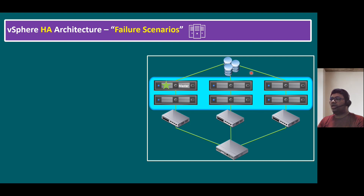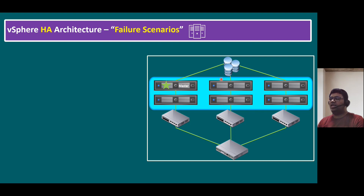The third scenario is network level. Physical network devices can fail unpredictably — a network switch may hang or specific switch ports may go down. When switch ports connected to an ESXi host go down, it can cause a network failure scenario triggering HA. Understanding these three failure scenarios — datastore, host, and network — allows you to easily address scenario-based interview or real-time questions.